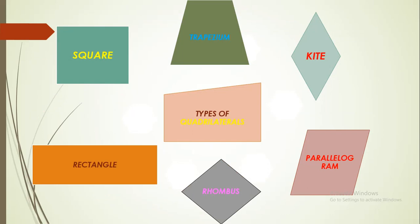Here we have six types of quadrilaterals: Trapezium, Kite, Parallelogram, Rhombus, Rectangle and Square. Let us have a look at each of them now.